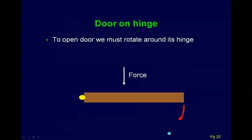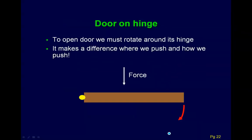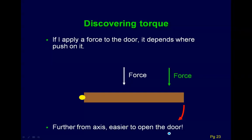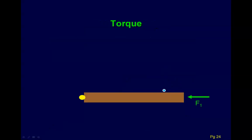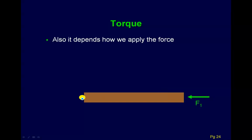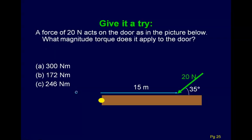With the door and hinge example, to open the door we must rotate about the hinge. It makes a difference where we push and how much we push — further from the axis, the easier it is to open the door. It also depends on how we apply the force. If you push directly toward the hinge, you're just pushing the door into its hinge and won't be able to rotate it. So it depends on where and how you're pushing.